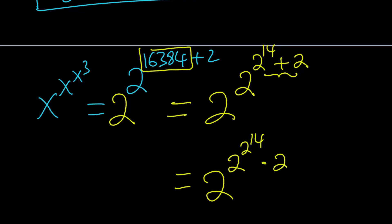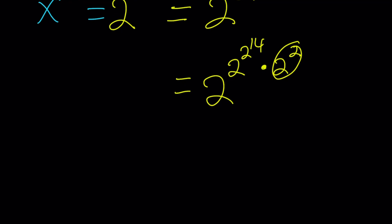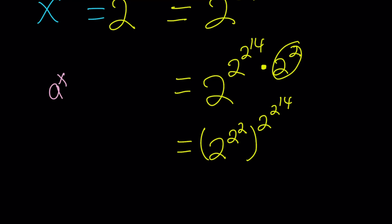This addition of exponents implies multiplication of powers. Now 2 to the second power is 4, so we put 4 inside and write: 2 to the 4th to the power 2 to the power 2 to the power 14. Remember: when you have a to the power x to the power y, you can write it as a to the power xy, and vice versa. So 2 squared becomes 4.